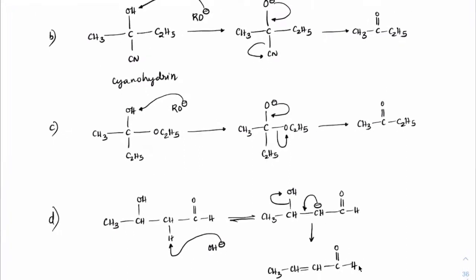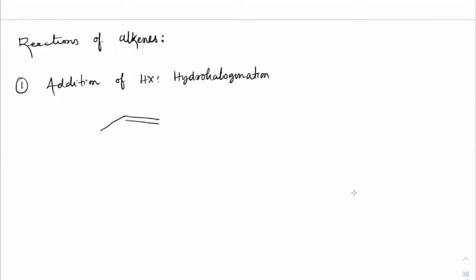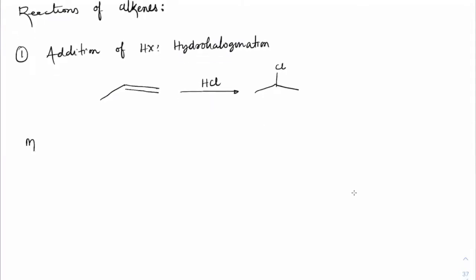Now the first addition reaction: addition of HX, also known as hydrohalogenation. An alkene treated with HCl gives the alkyl chloride product. Let's see the mechanism.